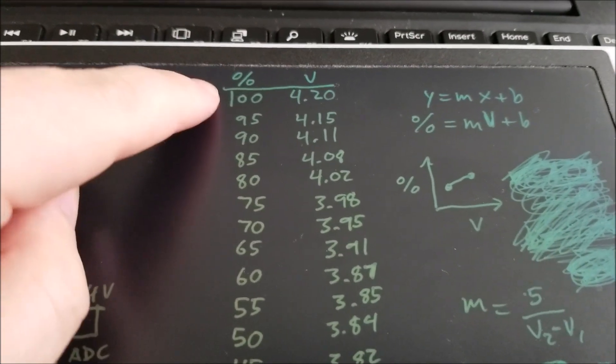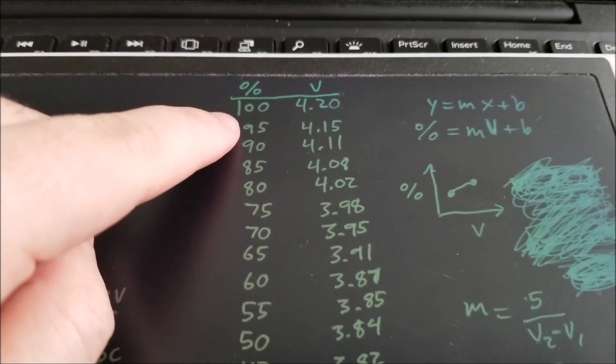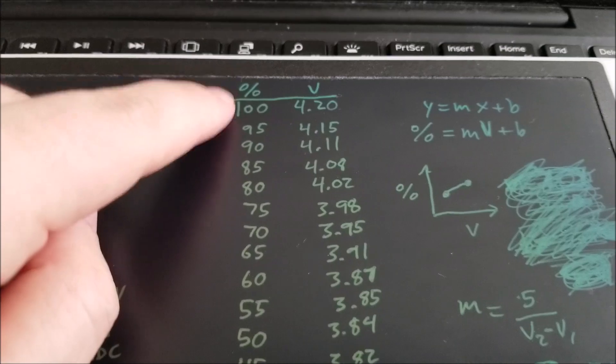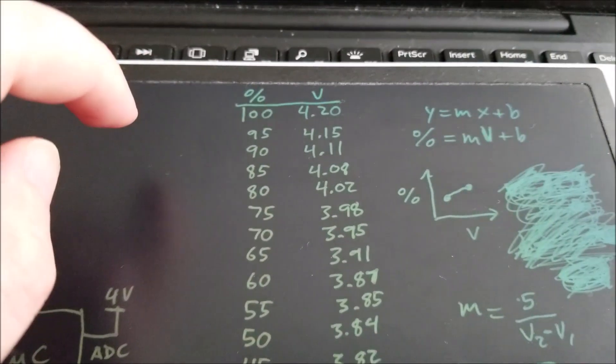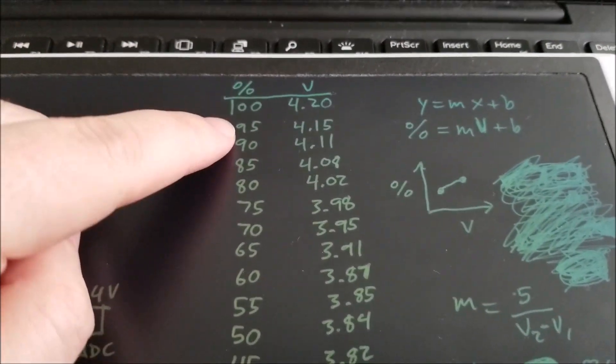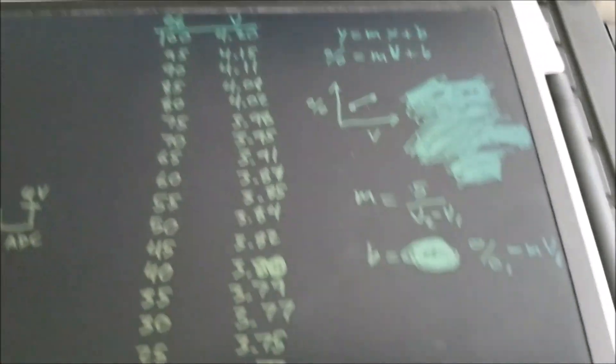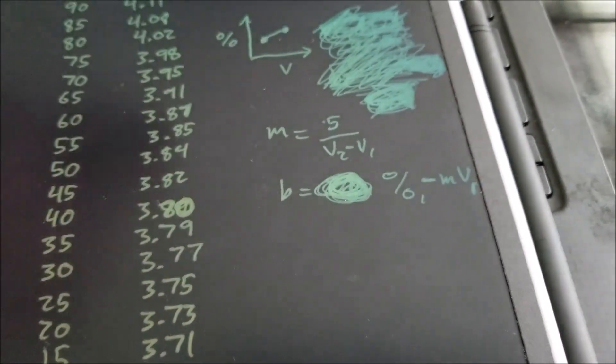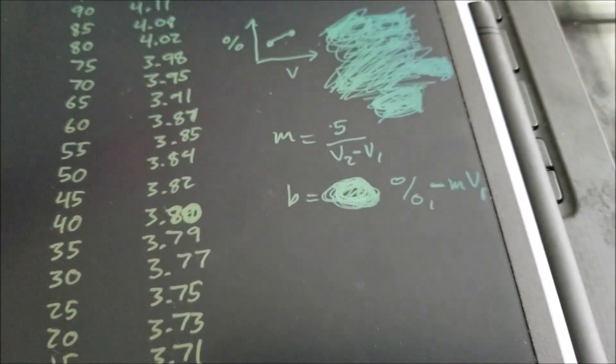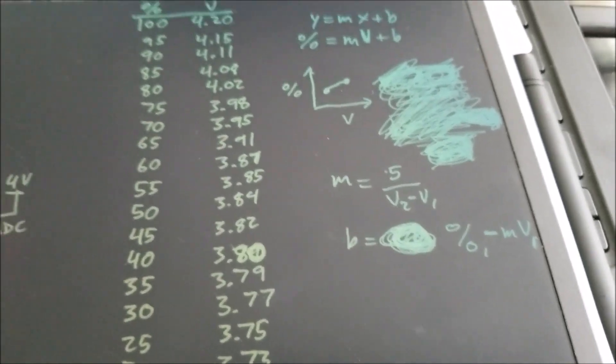So you have to pick one either. If we're trying to solve the line segment between 95 and 100, you either pick 100 and 4.2 volts, or you pick 95 and 4.15 volts and you solve for B and both values will give you the same value of B because it's a linear line segment.